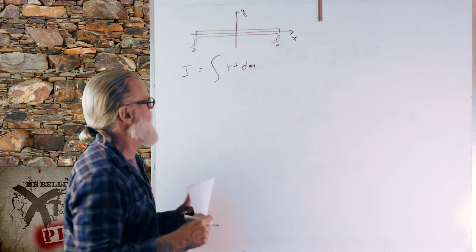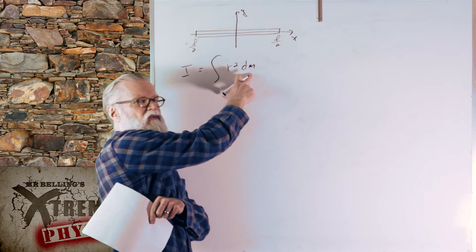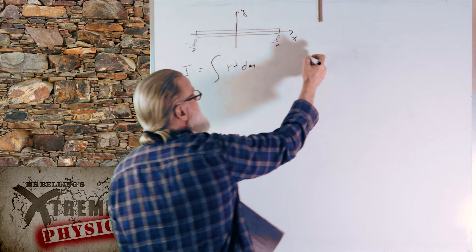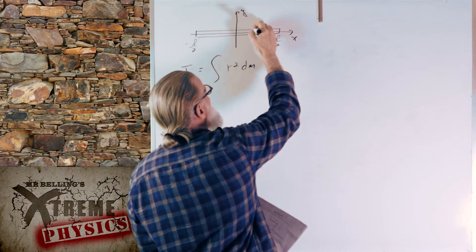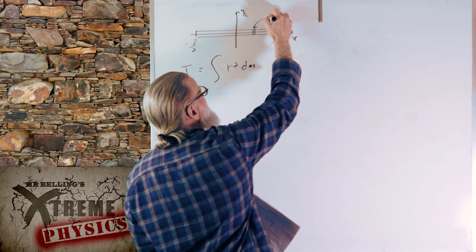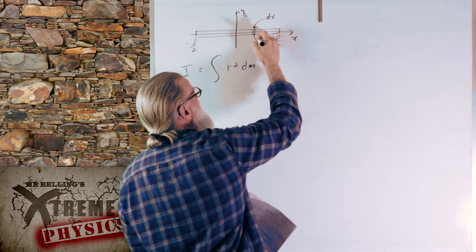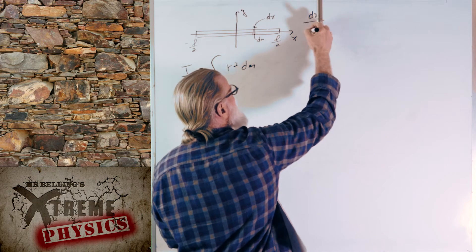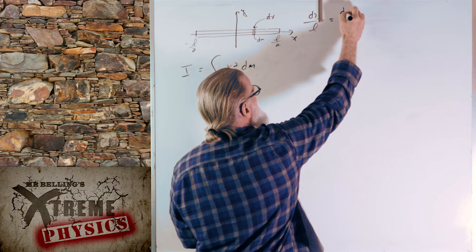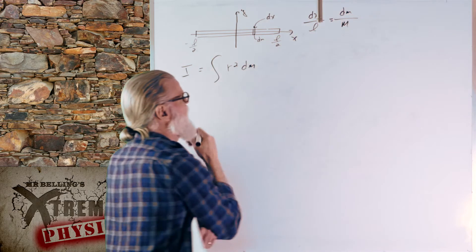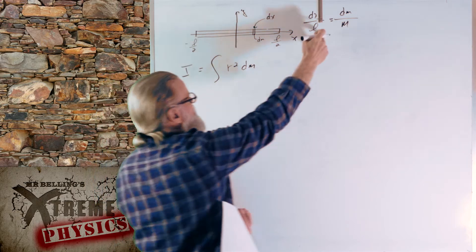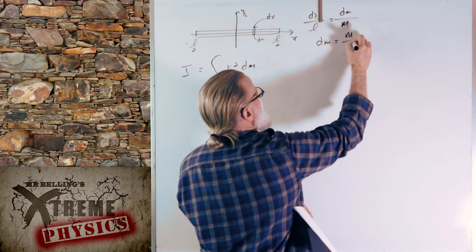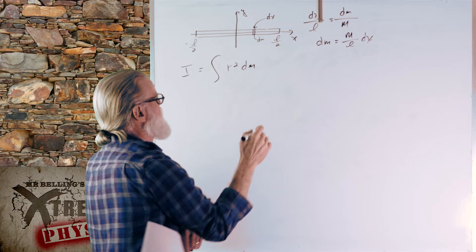The trick here is we need to integrate over space, not mass, so I have to relate mass to space. We have this little thin piece of width dx and it has a mass of dm. The little piece of length dx over the total length should equal the little piece of mass divided by the total mass. Solving for dm: dm equals M over L dx.